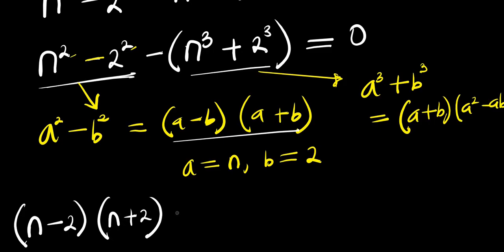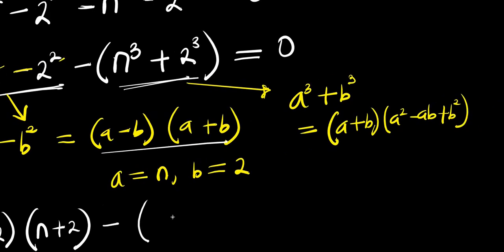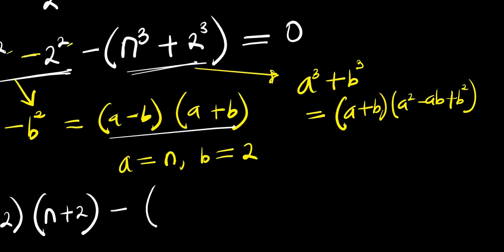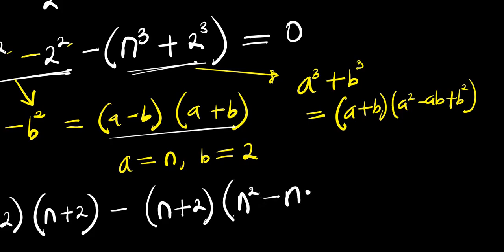Minus — for this we consider the sum of cubes identity. We have (n + 2)(n² - n·2 + 2²), and this equals 0.